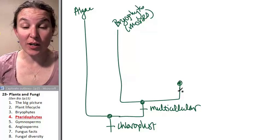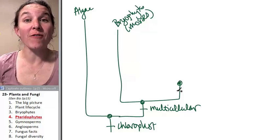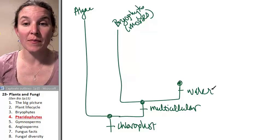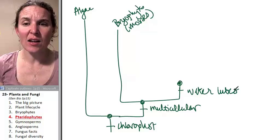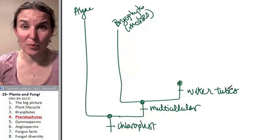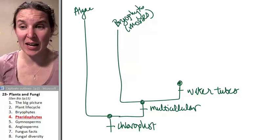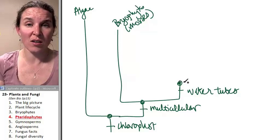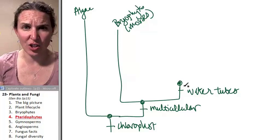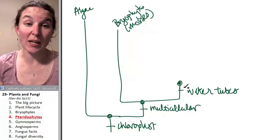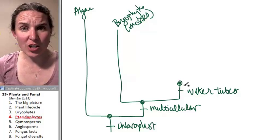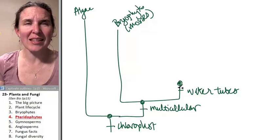Our next group of critters are ferns, and they have water tubes. They're called vascular plants because they have blood tubes — your blood vessels make up your vasculature, and that's just the tubing that carries stuff around in your body. Same function: water tubes in a plant. Think about a tree.